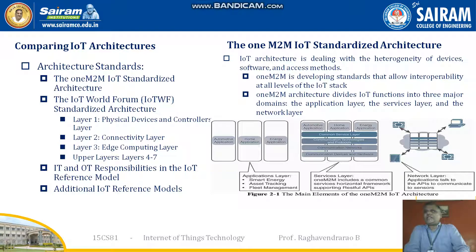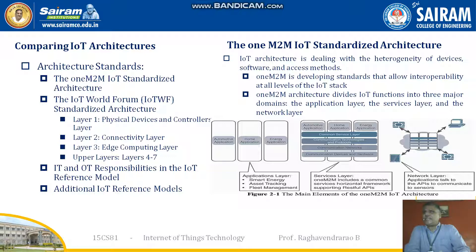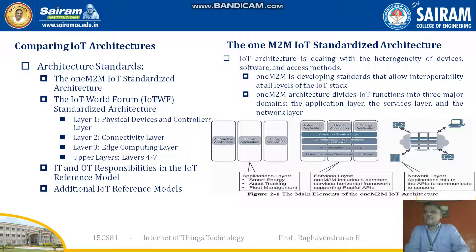The M2M standard architecture is shown here. The main elements in the M2M IoT architecture include heterogeneous devices, software, and access methods. M2M is developing standards that allow interoperability at all levels of the IoT stack, enabling interconnection of devices at all levels. The M2M architecture divides IoT functions into three major domains: the application layer, service layer, and network layer.